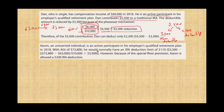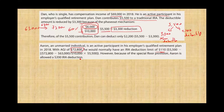Aaron is an unmarried individual who is an active participant in his employer's qualified retirement plan in 2018 with AGI of $72,800. He would normally have an IRA deduction limit of $110 based on the phase-out calculation. However, because of the special floor provision, Aaron is allowed a $200 deduction — there's a floor provision so you can contribute up to $200.